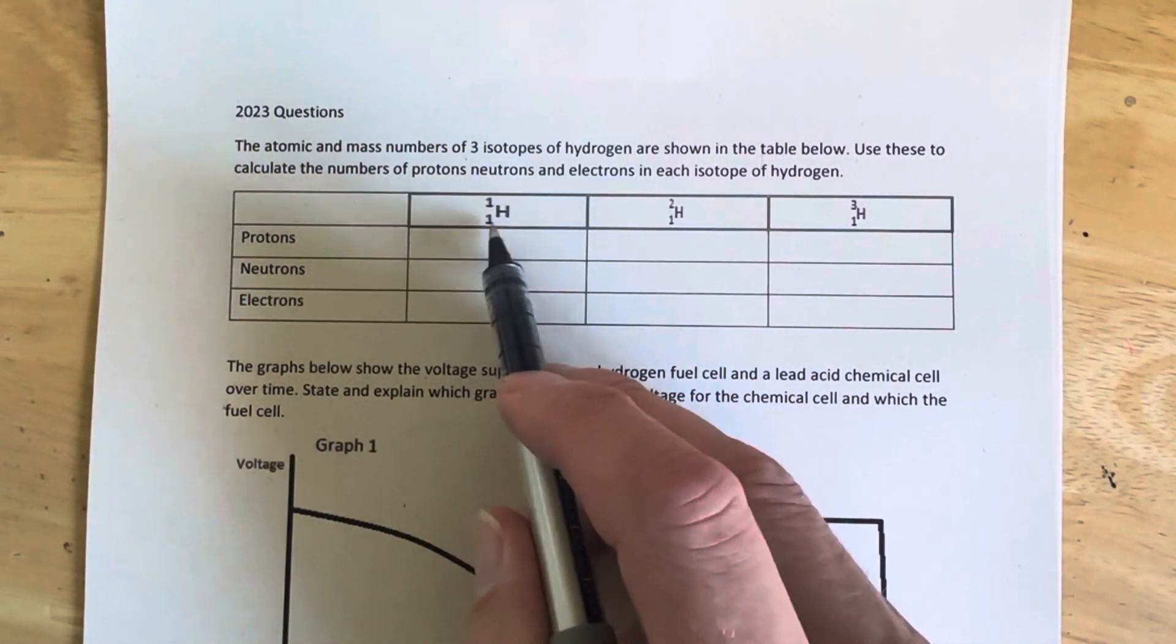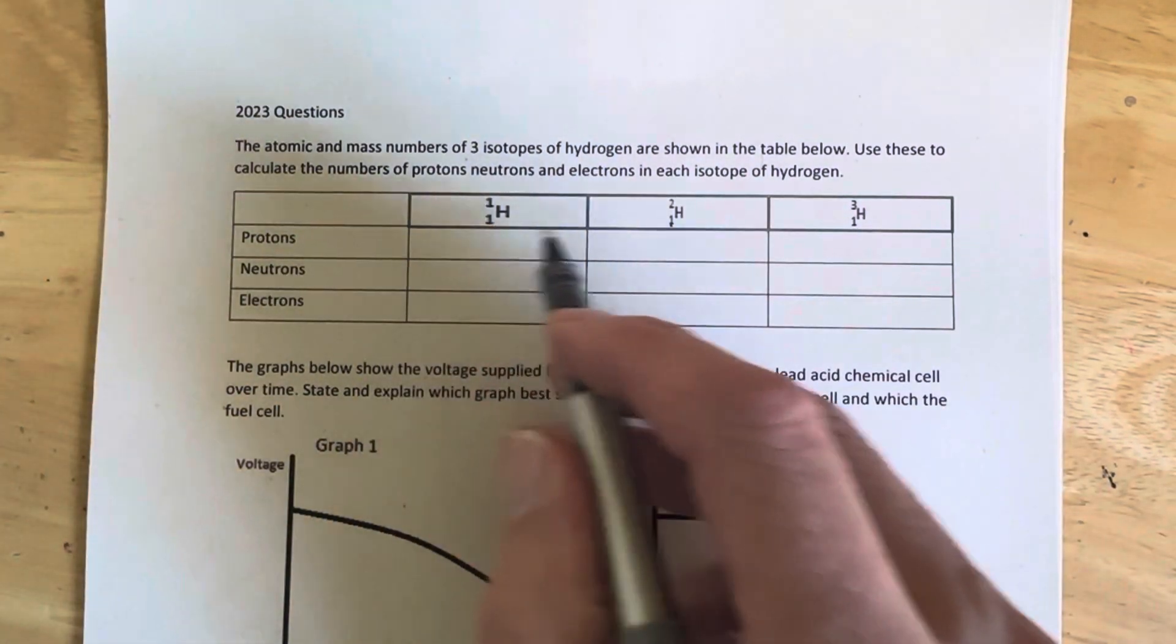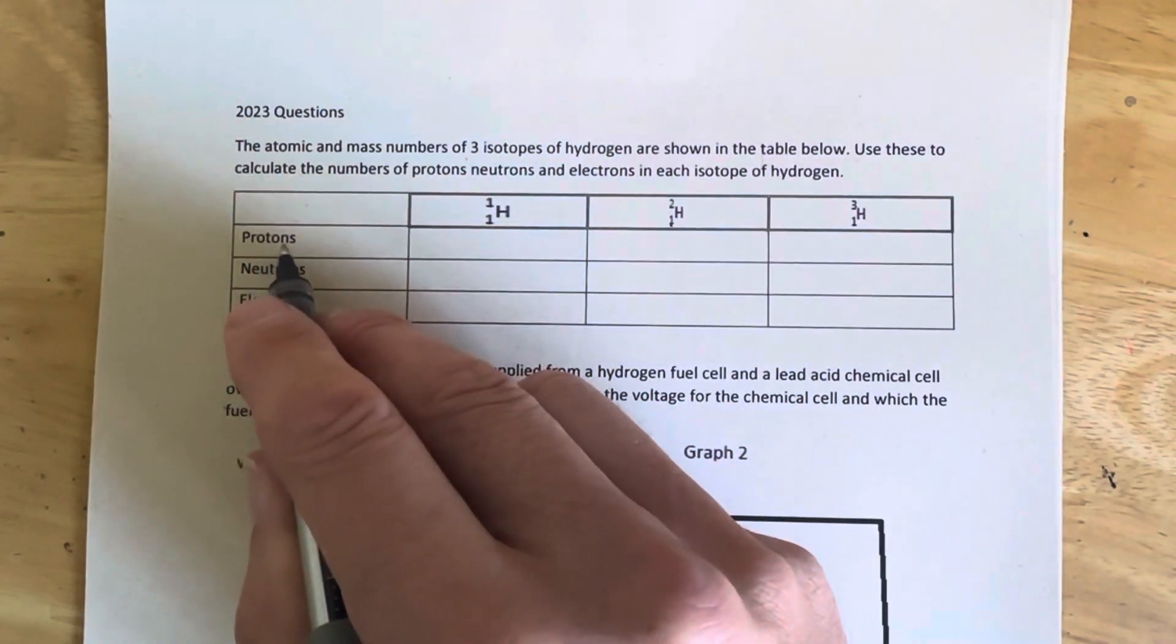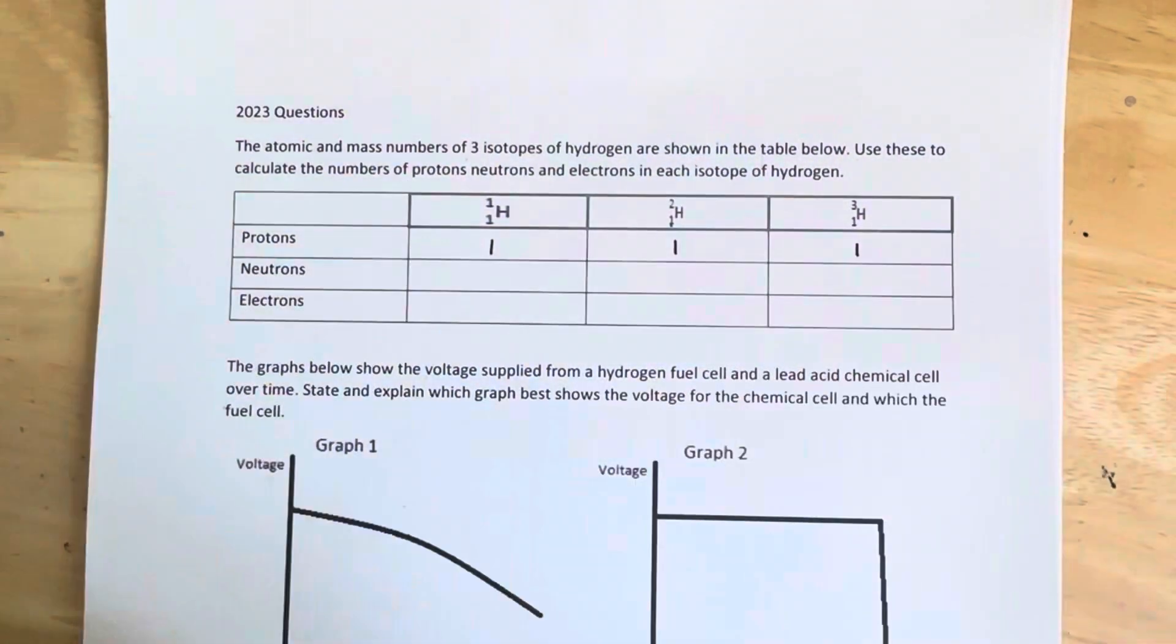It's the same atom, so the atomic number is one in each of them. And the atomic number is, of course, the proton number. So we can immediately put the protons for each of these in: one, one, and one, because they are the same elements. They have the same number of protons.